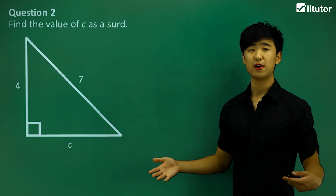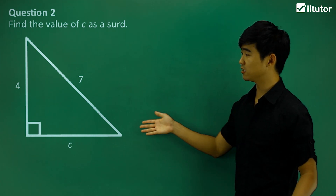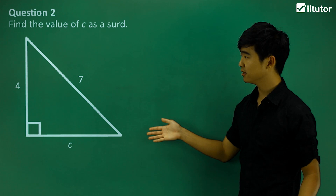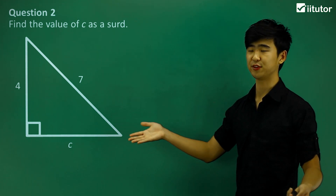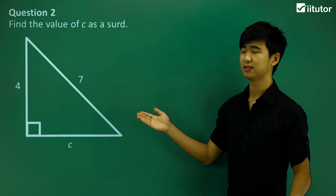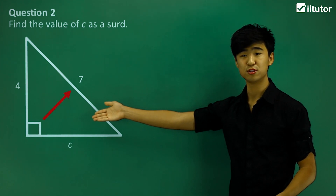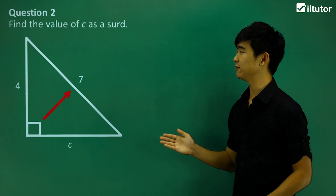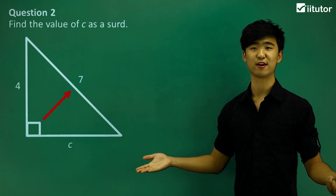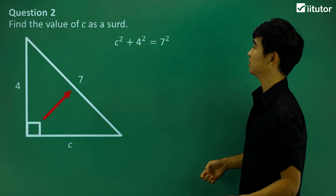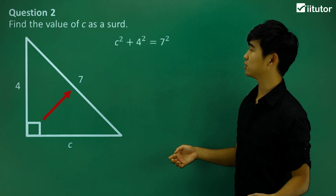Question number 2: find the value of c as a surd. We have a very similar question. First, let's write out the Pythagoras theorem for this right-angled triangle. The hypotenuse is the side opposite the right angle, which is 7 in this case. Writing out the theorem gives us: c squared plus 4 squared equals 7 squared.